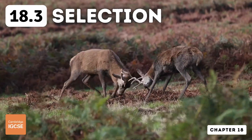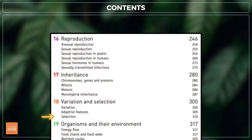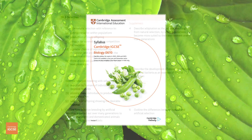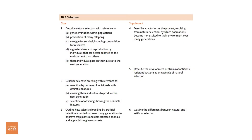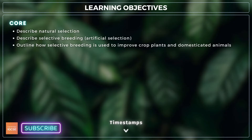Hello and welcome to another complete Cambridge IGCSE biology lesson, where you'll learn absolutely everything you need to know on topic 18.3, Selection. We'll be following the Cambridge syllabus exactly. For topic 18.3, you need to describe the theory of natural selection, describe the process of selective breeding, and outline how selective breeding is used to improve crop plants and domesticated animals.